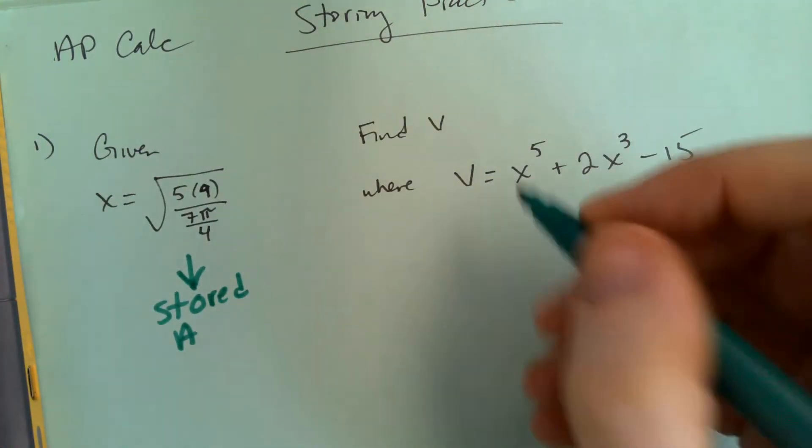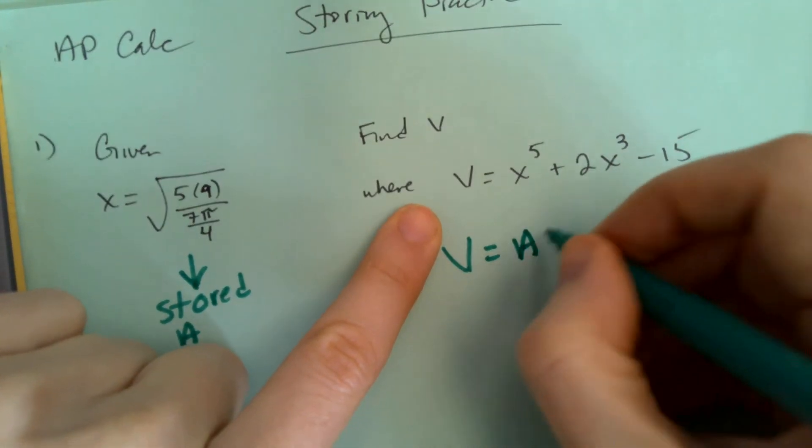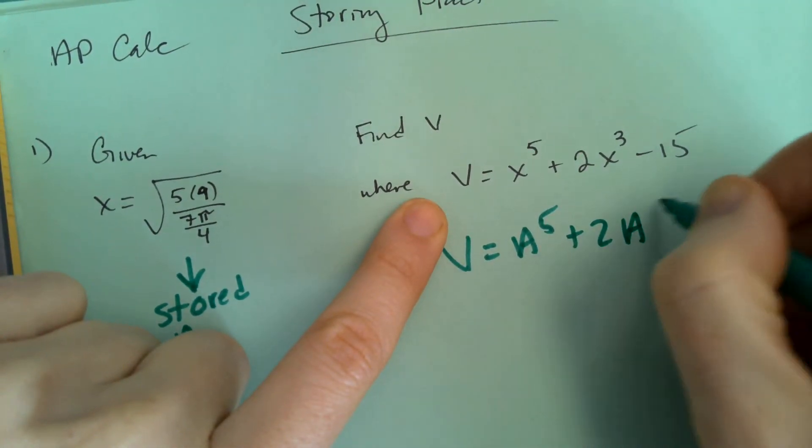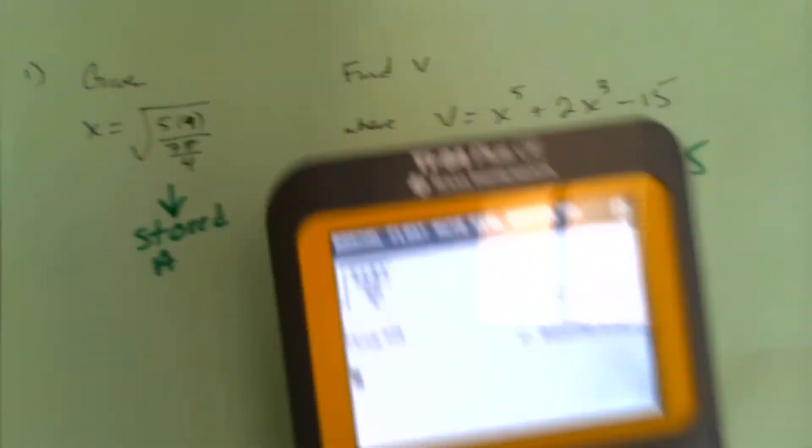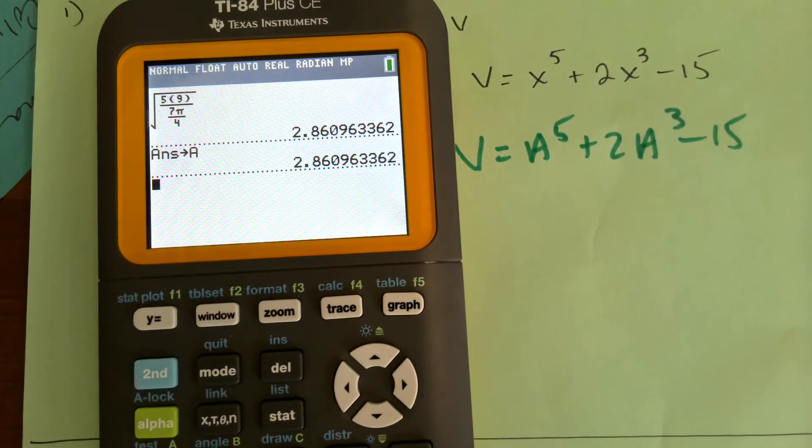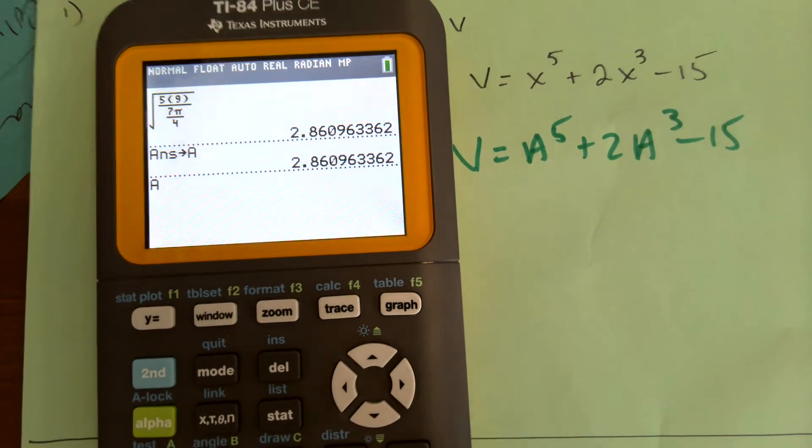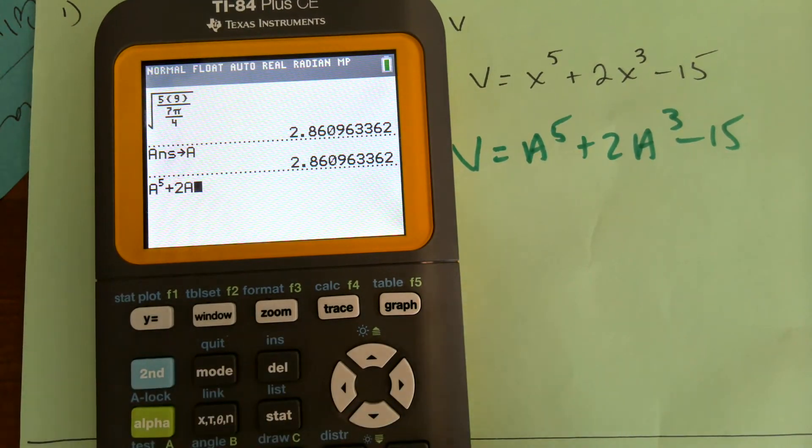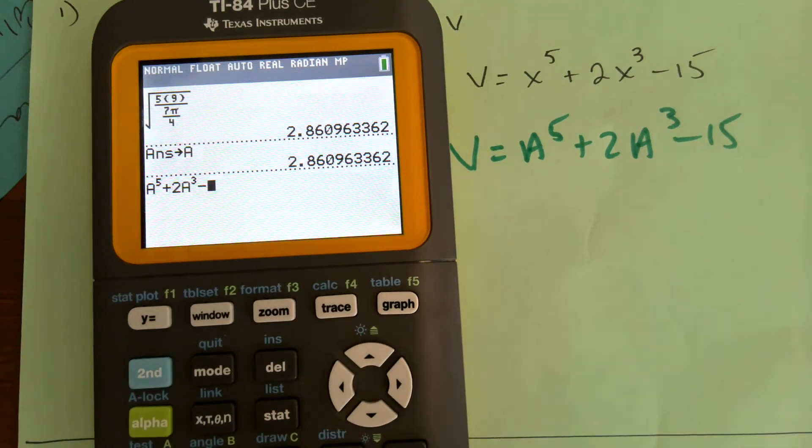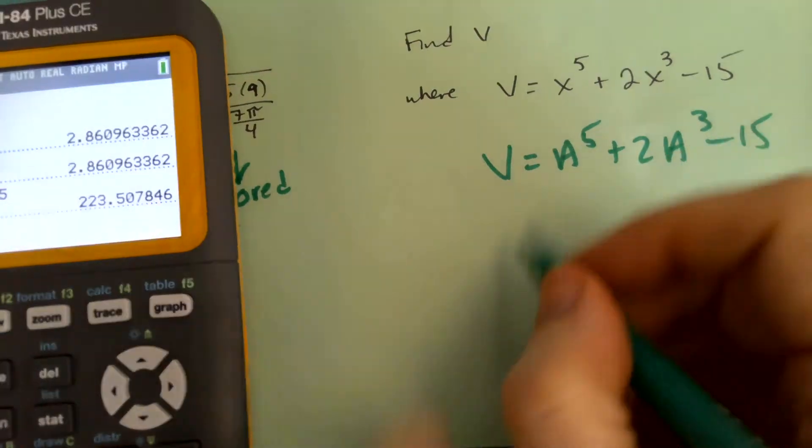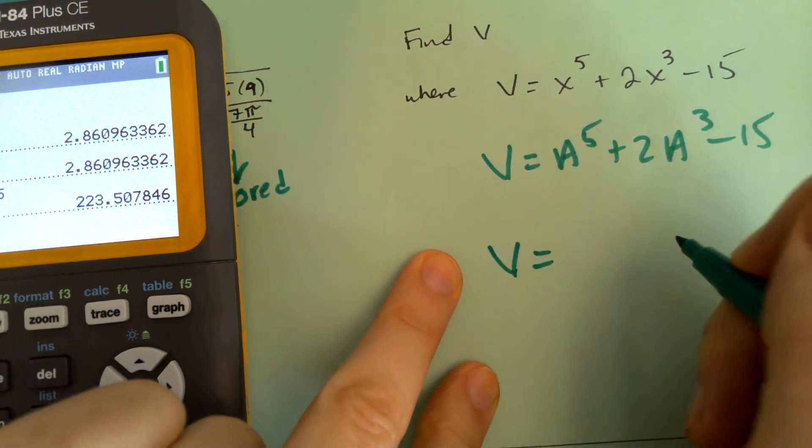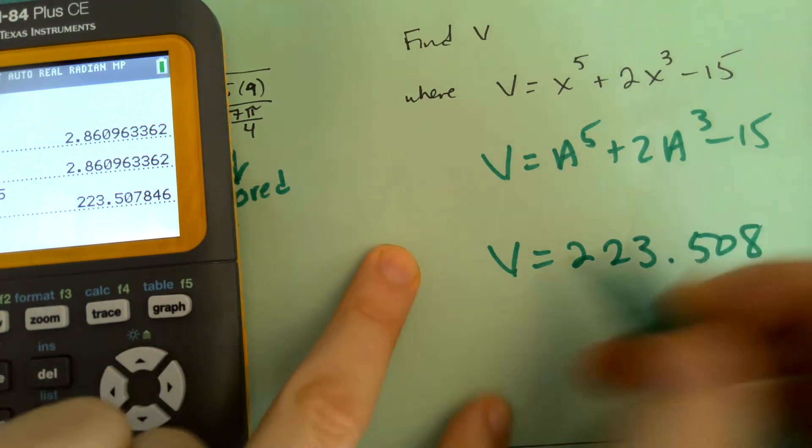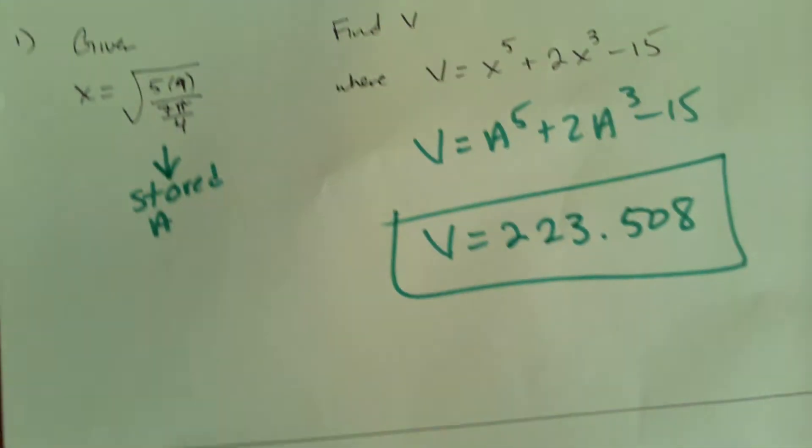All right. And so now I just go V equals, you know, you don't even need to show this part. V equals A to the 5th plus 2A to the 3rd minus 15. All right. So then I go A to the 5th plus 2A to the 3rd minus 15. Okay. So V, and then when we do our answer, we want at least three decimal places. So 223.508.